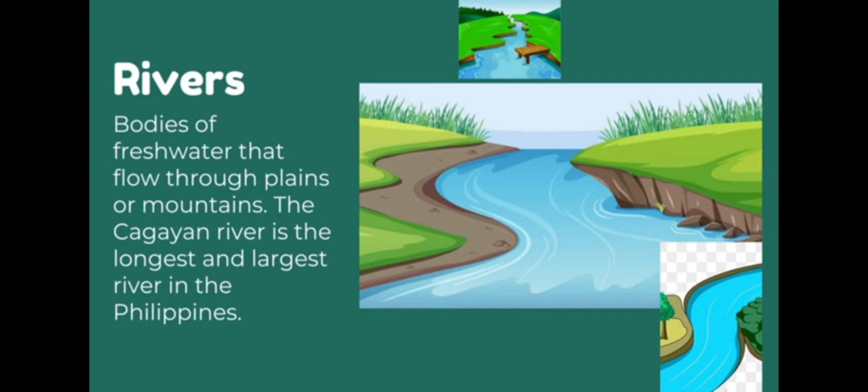The next one is rivers — bodies of fresh water that flow through plains or mountains. These are some landforms and water bodies. Please revise and solve the worksheet also. Bye-bye, take care.